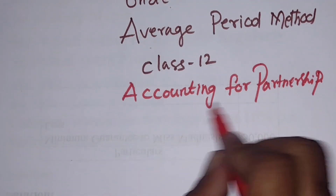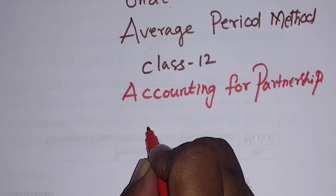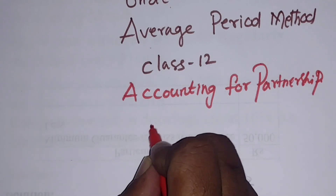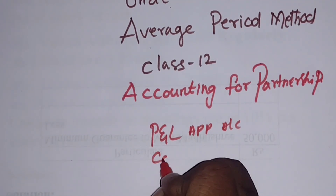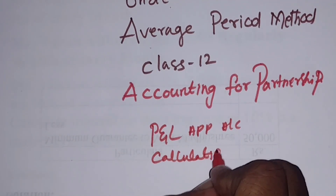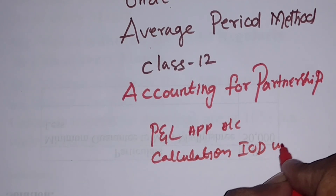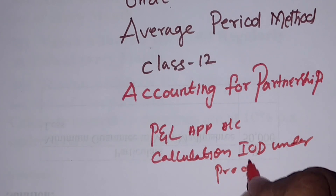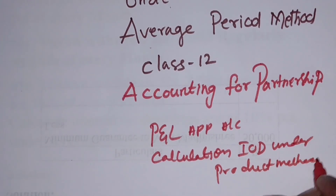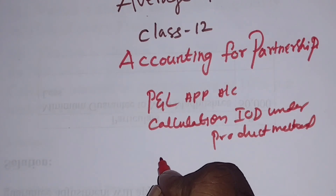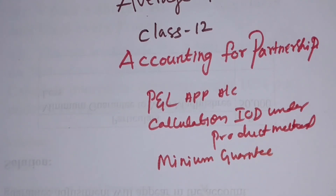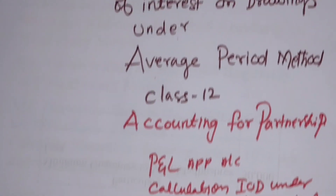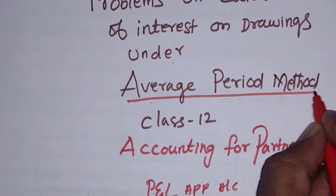In this accounting for partnership chapter, explanations have already been covered on the profit and loss appropriation account, calculation of interest on drawings under the product method, and minimum guarantee method. Today I am going to explain the problems on the average period method.